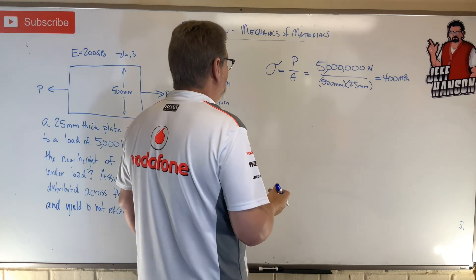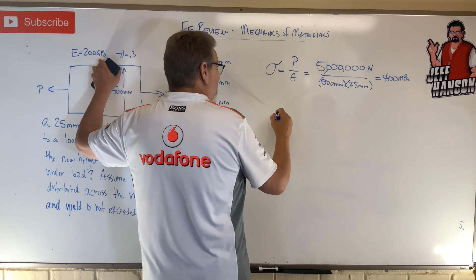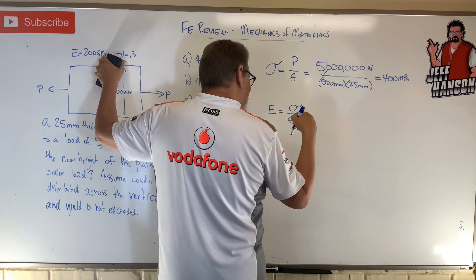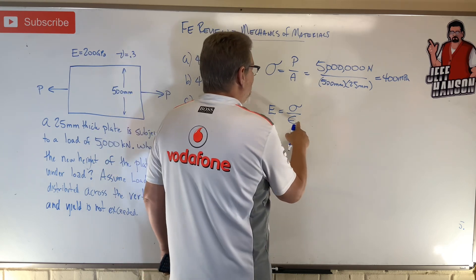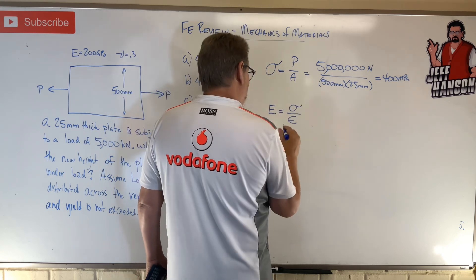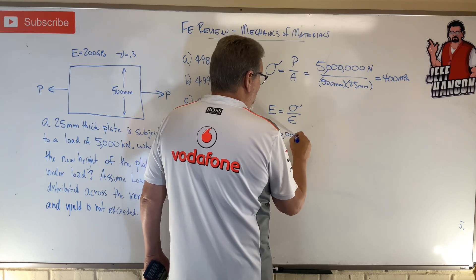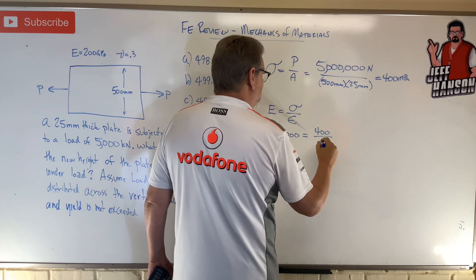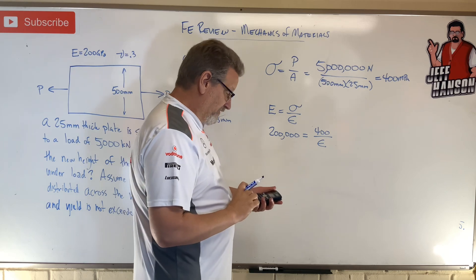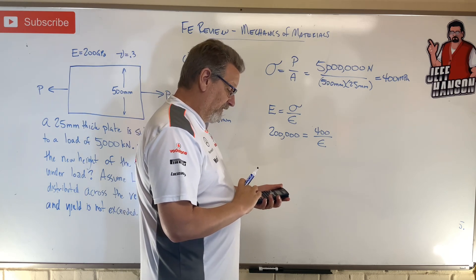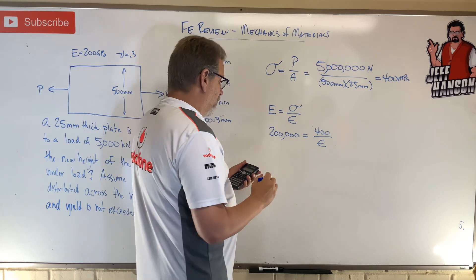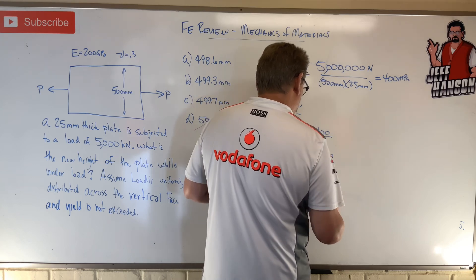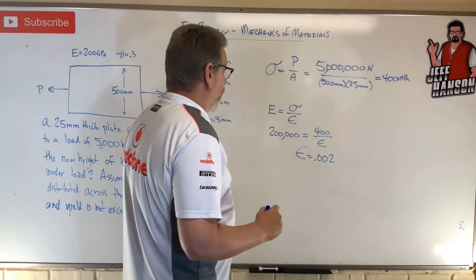I'm given E, so I can use the stress-strain relationship: E equals sigma over strain. E is 200 gigapascals, which is 200,000 megapascals. So 200,000 equals 400 divided by strain. Rearranging, strain equals 400 divided by 200,000, which gives us a longitudinal strain of 0.002.